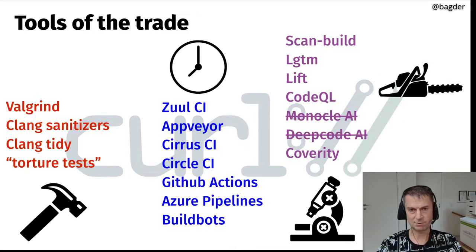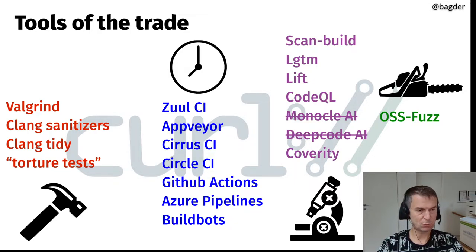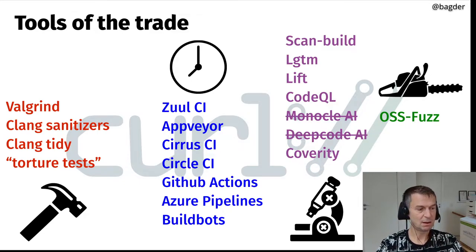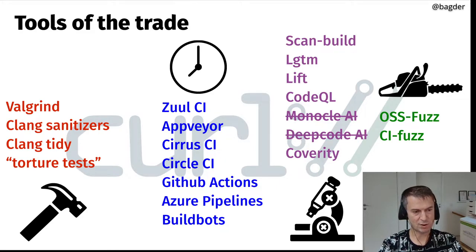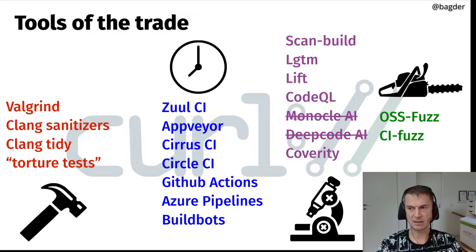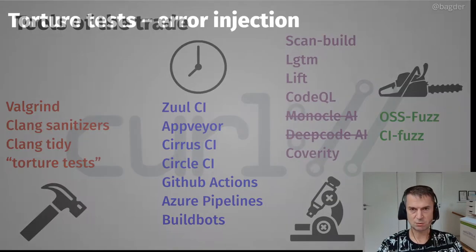We run fuzzing as part of the OSS-Fuzz project — a Google-run project that fuzzes curl code nonstop, updates from curl master regularly, and reports to us if they find any flaws or crashes. They rarely find anything these days. We also run CI-Fuzz, which runs fuzzing on each pull request for about 40 minutes to detect obvious flaws before we merge.